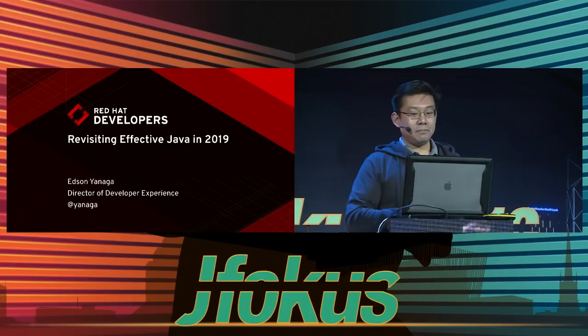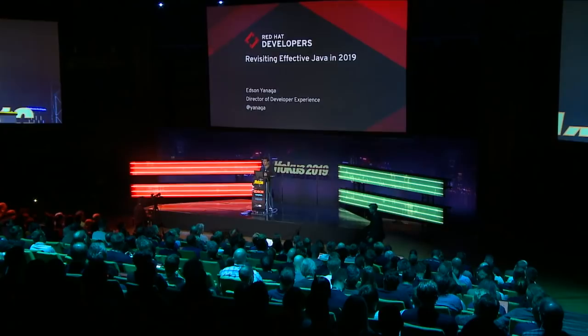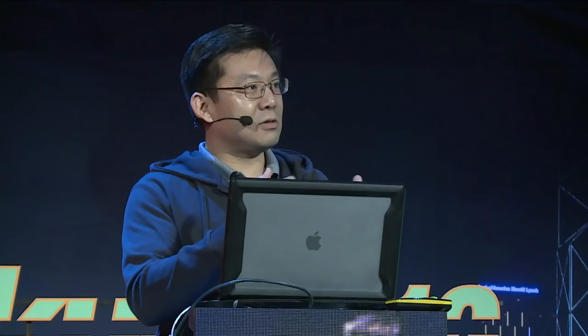If you haven't read it before, I strongly recommend you to do so. Effective Java has been one of the most important books in my career as a Java developer. And even if you read it before, I still keep opening the book and rereading some sections — serialization, for example, is something a bit complicated and you're always rereading those sections.